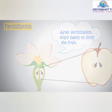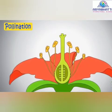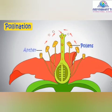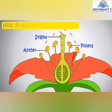Now let's see what is pollination. Pollination is the process by which pollen is transferred from the anther — the male part — to the stigma, which is the female part of the plant, thereby enabling fertilization and reproduction. There are various ways in which pollens reach the stigma.